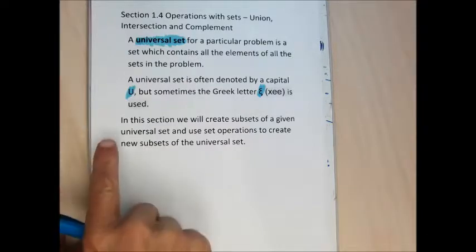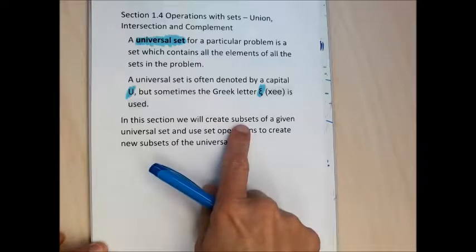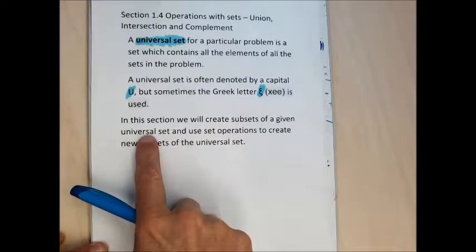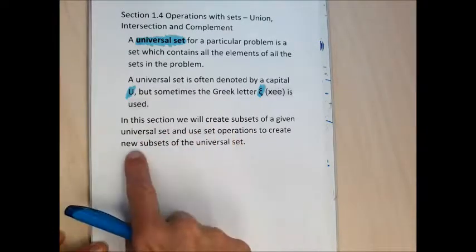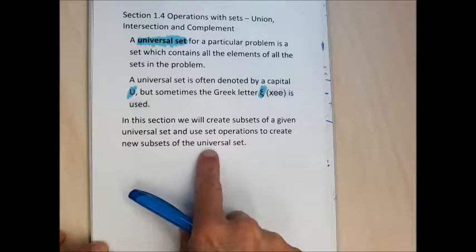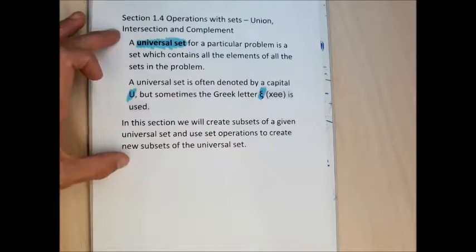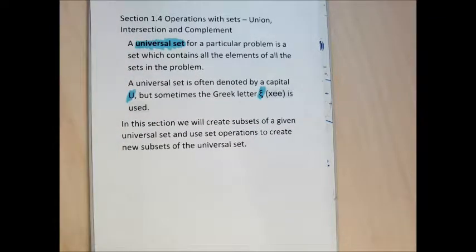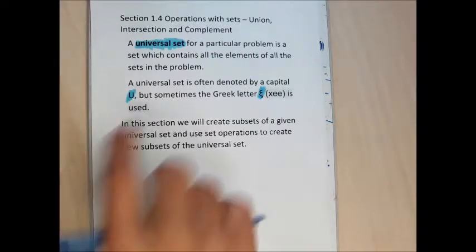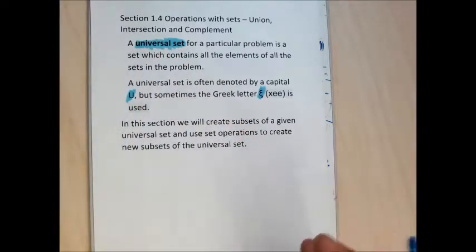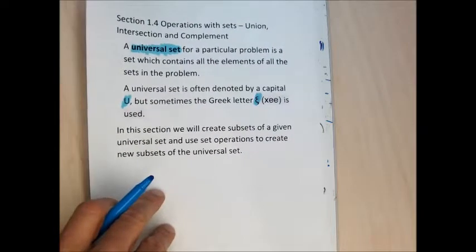In this section, we're going to create subsets from a universal set, and then use operations to create new subsets of the universal set from those subsets. That's a lot of words that you don't need to perfectly understand right now. As we go through the examples it will make more sense. A universal set is just some global set we're going to take, form subsets from, and then form those subsets into other sets.